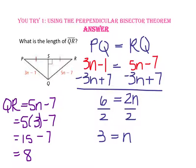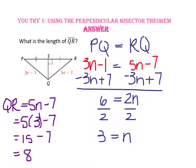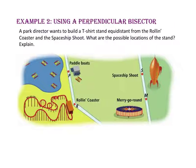To check our answer: we know that the length of segment QR equals the length of segment QP. Since QR has a length of 8, so should 3N minus 1. Since 3 times 3 is 9, minus 1 is 8, we know we are correct.